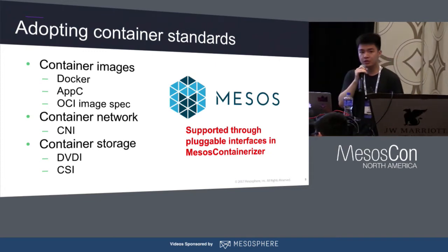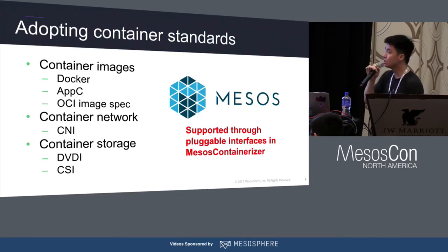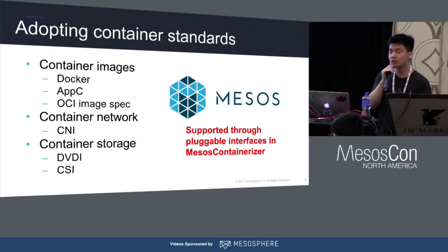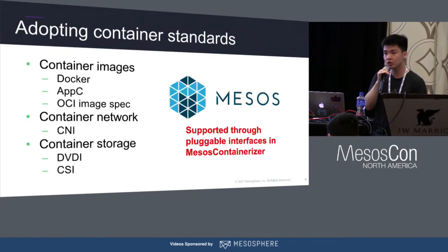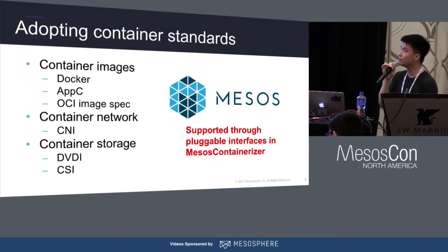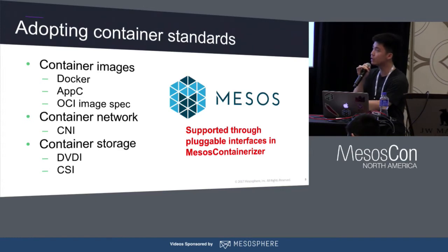We support Docker image format but not only Docker — we also support the ACI image format proposed by CoreOS and the OCI image spec, which is going to land in Mesos soon. We started thinking about the fact that if we have everything rely on Docker, we cannot guarantee semantics will never change. In the industry, we definitely need to embrace standards — for container runtime images, networking, and storage — so that different vendors can develop their own plugins to support their infrastructure with the container orchestrator.